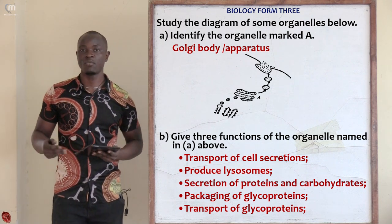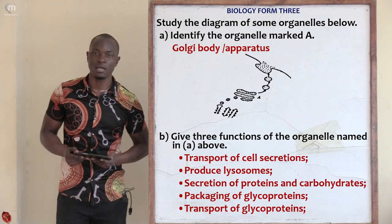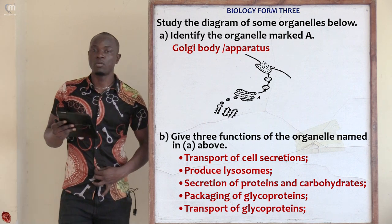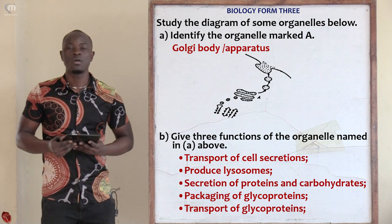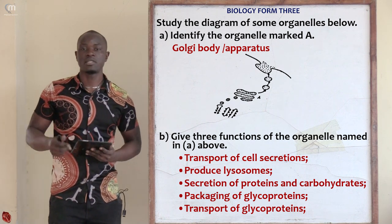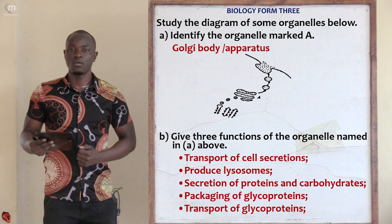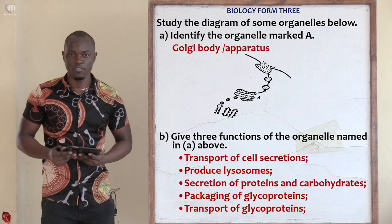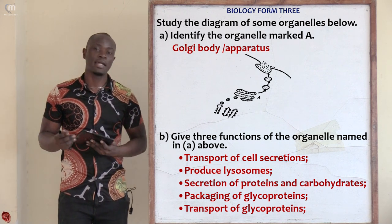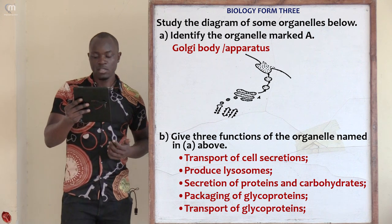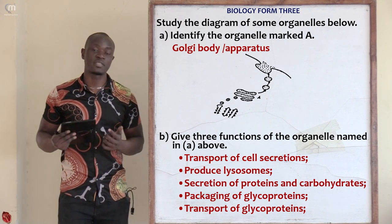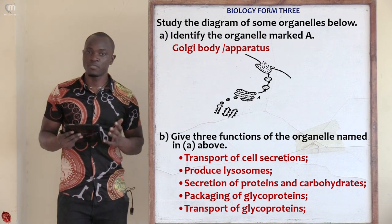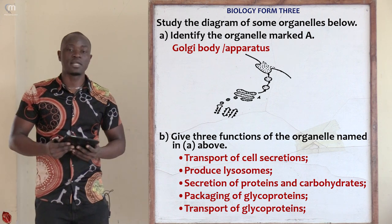You can see the small circles with arrows on the Golgi apparatus. Question A asks us to identify the organelle labeled A — that is the Golgi apparatus or Golgi body. Question B asks for three functions of the Golgi apparatus. The first function is that it assists in transportation of cell secretions.